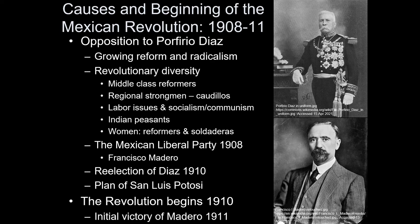But by 1910, Diaz changed his mind. When he declared he would run again for president and went back on his promise to step down, that just intensified the anger further. The election was held in 1910, and Diaz declared victory — claiming he had won by something like 99% of the vote. He wasn't even trying to be subtle. This is one of the most fraudulent elections in the history of any democracy. The fact that he did it so over the top would be the trigger that launched the Mexican Revolution.